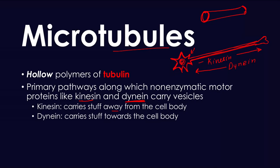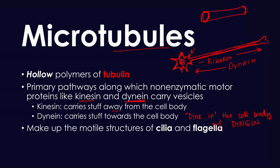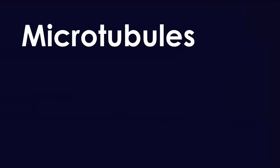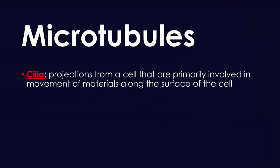Both dynein and kinesin make up the motor structures, and specifically microtubules make up the motor structure of cilia and flagella. Cilia and flagella are very important — you should definitely know what they are, as they come back in medical school.